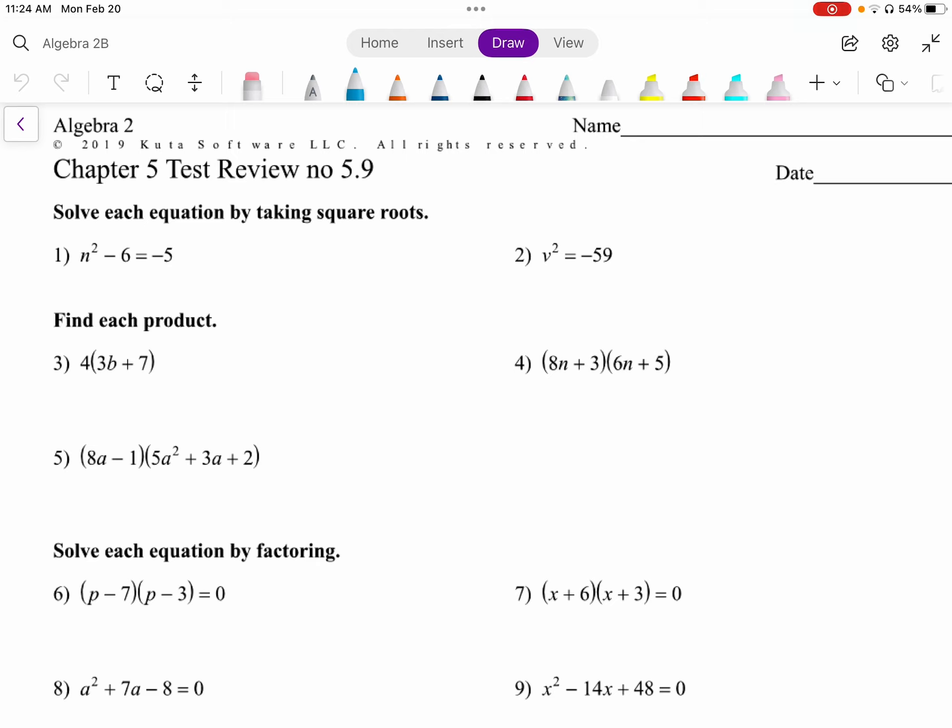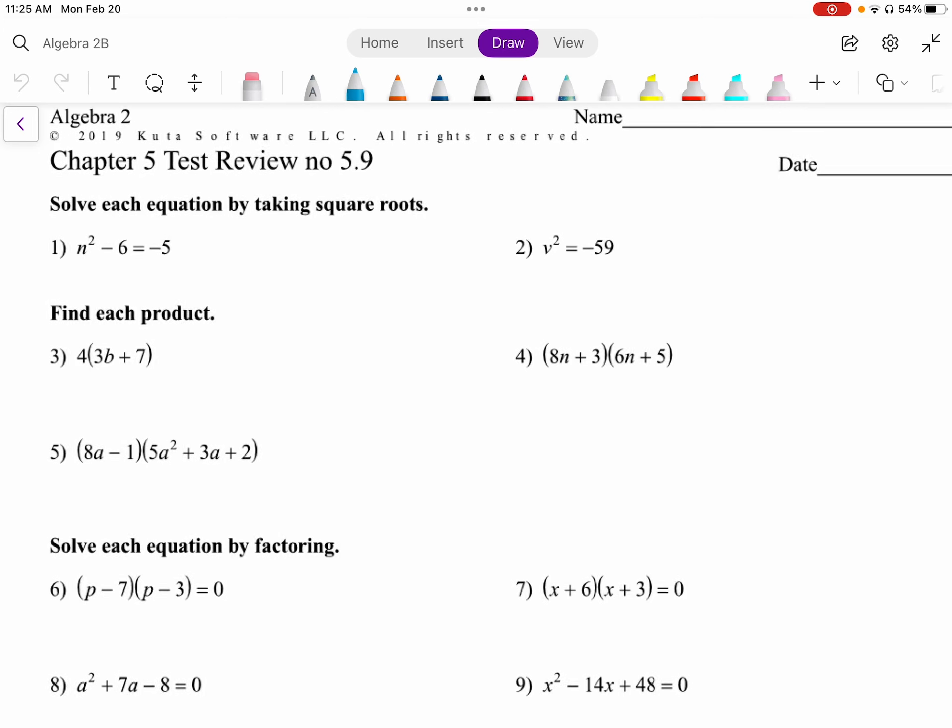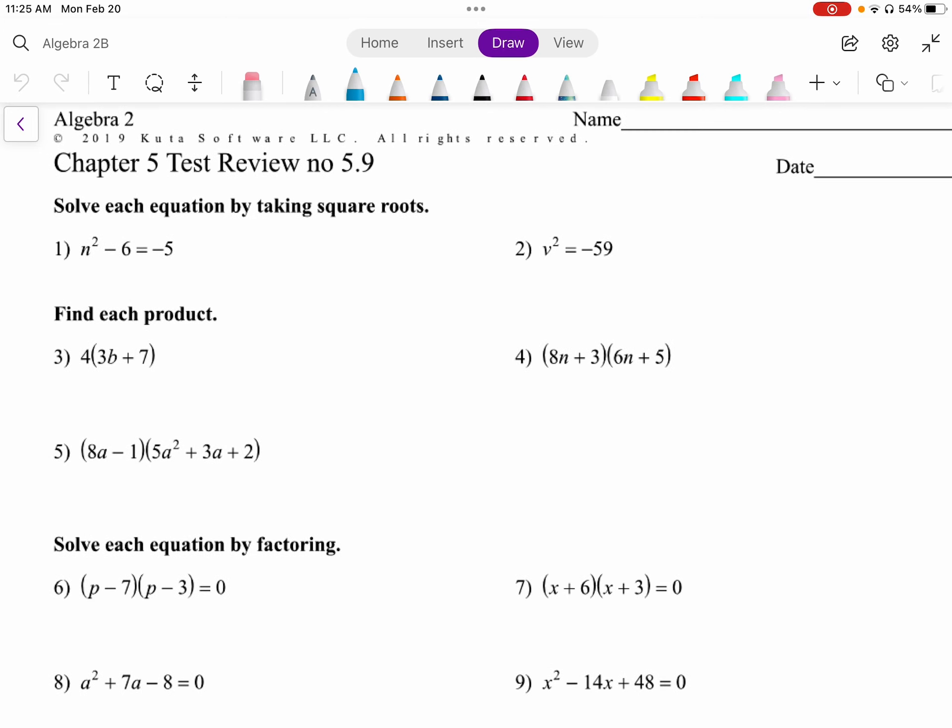Number 1 and 2 says solve each equation by taking square roots. Well, in order to do that, we need to get the squared term by itself. Remember, this only works when there's a quadratic term and a constant, no linear term. So in number 1, we would just add 6 to both sides. n squared equals 1, and to get rid of a squared, we take the square root. Make sure you put plus or minus 1, and also you do want to simplify. In this case, the square root of 1 is just 1, so we have plus or minus 1.